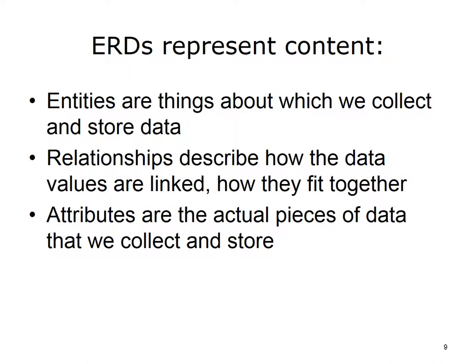We collect and store data about things in the real world. When these data values have meaning — definition, context, such as what the value is about, when it was collected — we call the data information. Data models including ERDs represent three things: 1. Entities, or things about which we collect data — for example, cars, people, organizations. 2. Relationships between the data values — for example, a person can have no cars, one car, or many cars. And 3. Attributes, or the data that we collect about the entities — for example, the make and model of a car, or the name and address of a person.